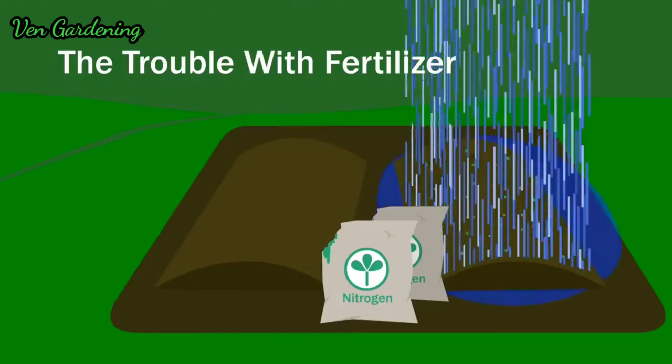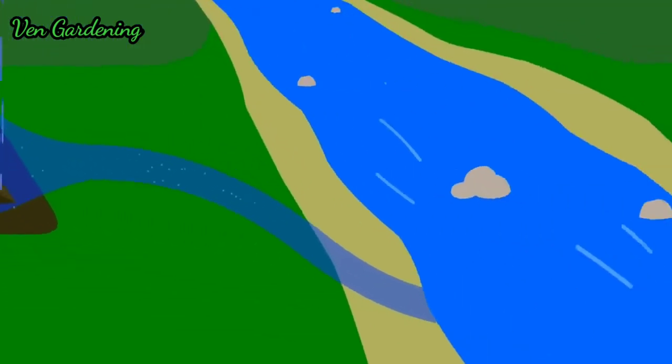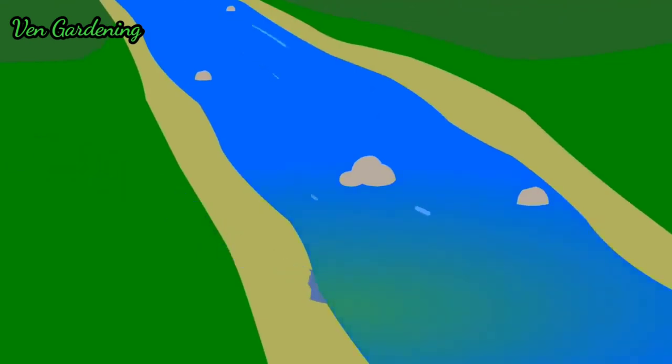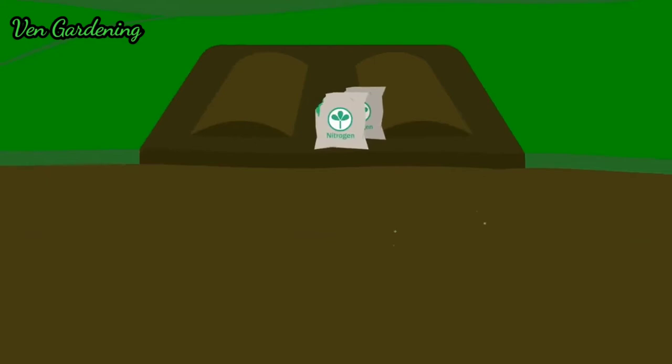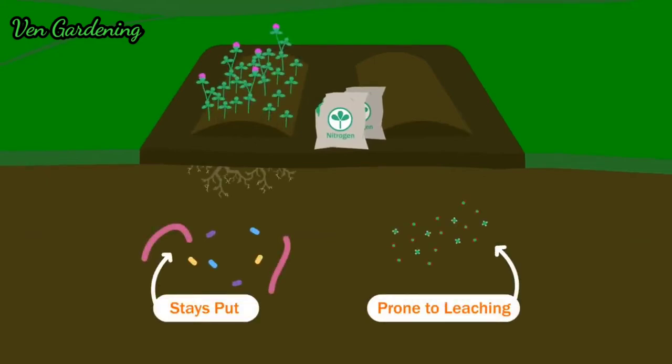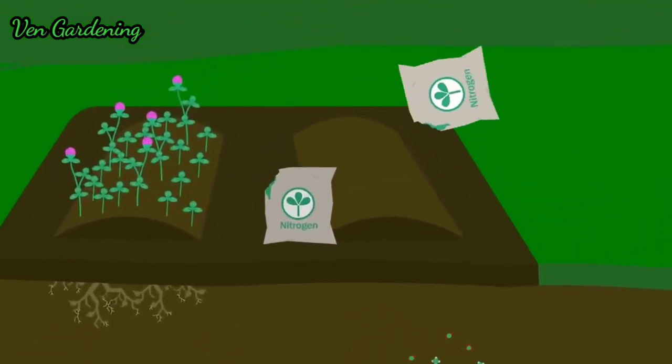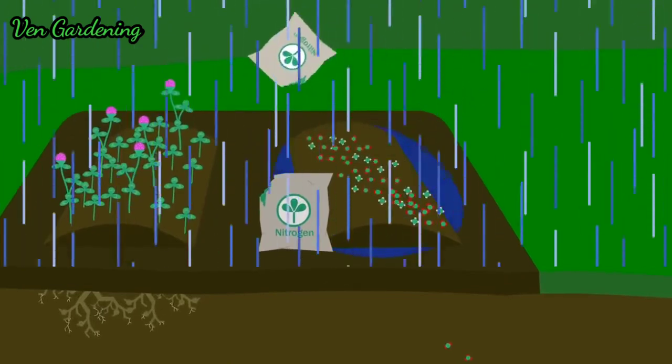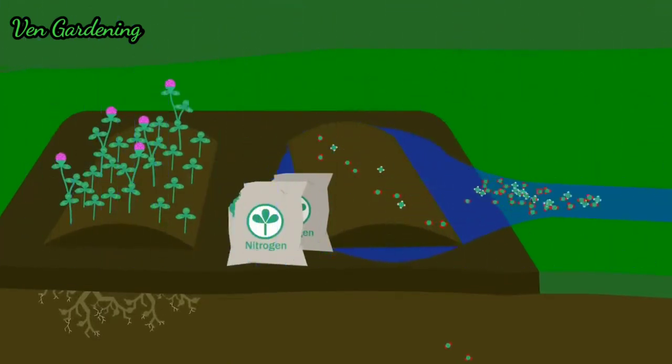You know how earlier I said that water can carry soil nitrogen away? This nitrogen ends up in rivers, which can disrupt the ecosystem by enabling algae to dominate. But remember, this only happens to loose nitrogen in the soil, and not to nitrogen embedded in organisms. And fertilizer adds pure nitrogen without the organisms. So when it rains, huge amounts of it run off and pollute the water.